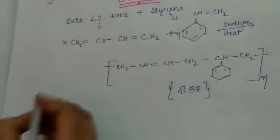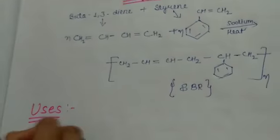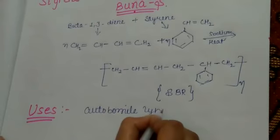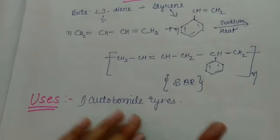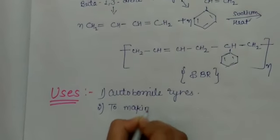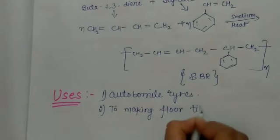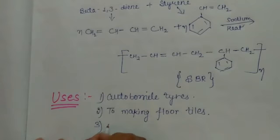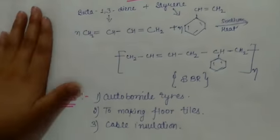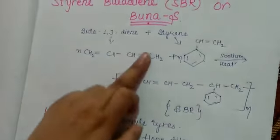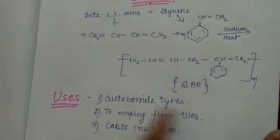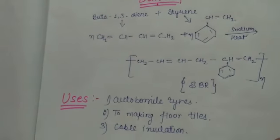Now Buna-S rubber uses: First of all, we use it in automobile tires. We use it to make floor tiles, and we use it for cable insulation. So we use styrene butadiene SBR and Buna-S rubber in automobile tires, floor tiles, and cable insulation.